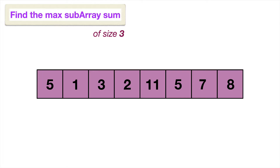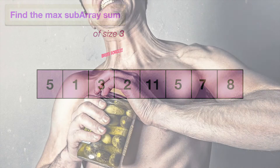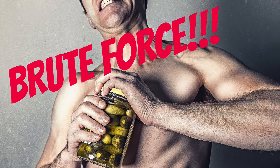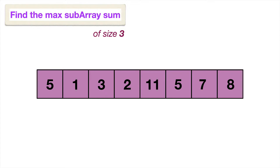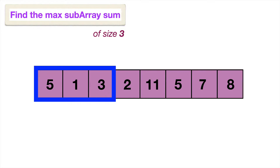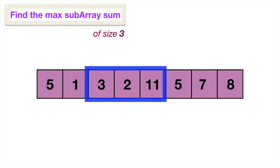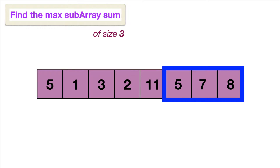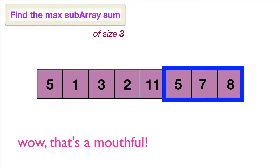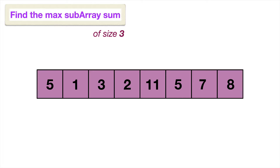To illustrate the usefulness of the sliding window technique, let's first look at the brute force approach. We'd take the first three elements in the array — the five, the one, and the three — total them up to get our current sum, which would also be our current maximum sum, and store those in variables. Then we'd iterate through the entire array, calculating a current sum at each index and comparing it to the maximum sum seen so far, updating it if the current sum is greater. This requires nested for loops, leading to an inefficient algorithm.